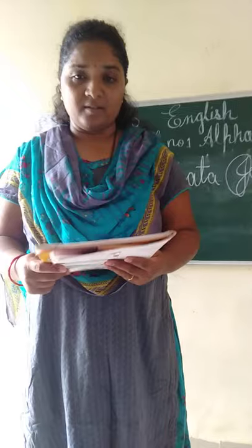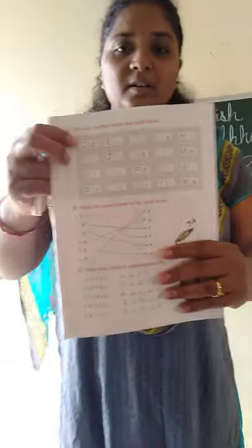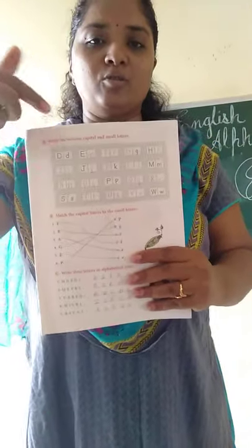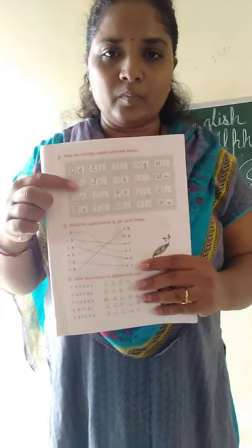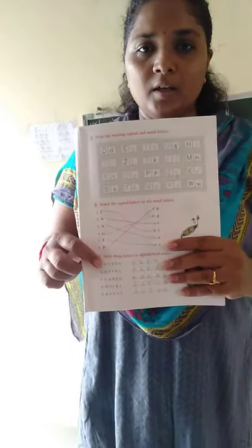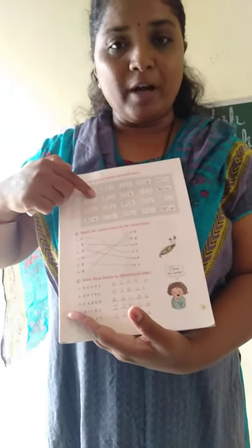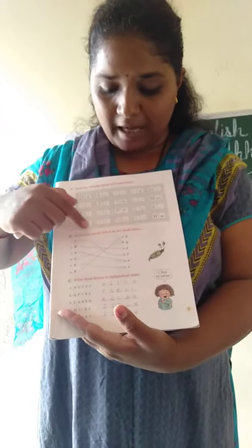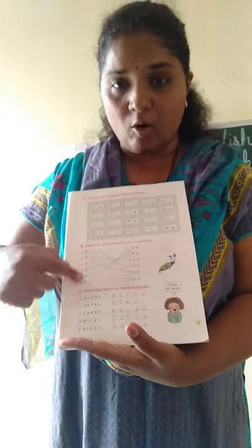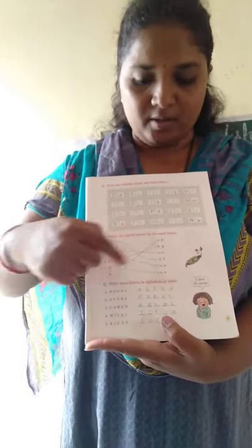Now page number 5: write the missing capital letters. Some capital letters and small letters are given, and you have to write down the missing letters as I have written here. You also have to match the capital letters to the small letters — capital letters are on one side and small letters on the other side, so you have to match them.